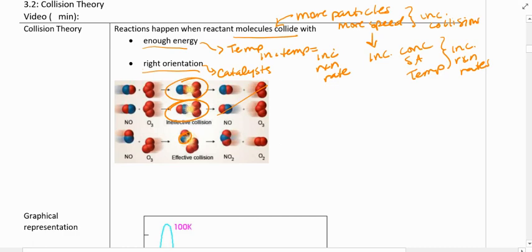However, if this little nitrogen on the nitrogen monoxide collides with one of the oxygens on the end of the ozone, then some products are made. We get an effective collision. So those two molecules have to hit in just the right way for the reaction to happen.